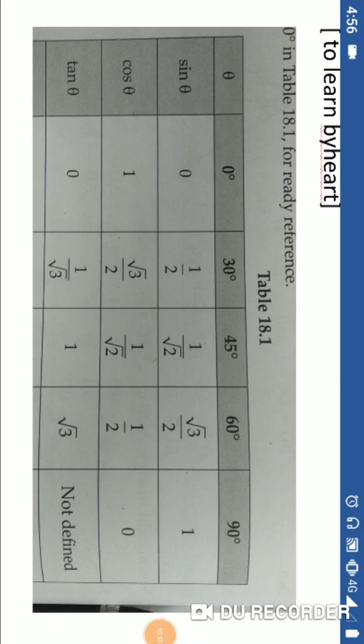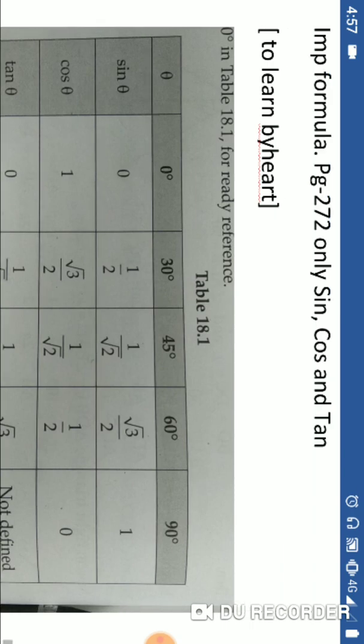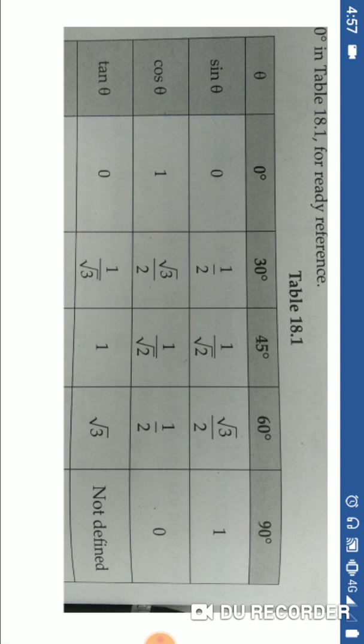The trigonometric table covers angles 0 degrees, 30 degrees, 45 degrees, 60 degrees, and 90 degrees. sin 0 is 0, cos 60 is 1 by 2, tan 30 is 1 by root 3. Learn sin, cos, and tan values by heart — they are on page 272 of the textbook.